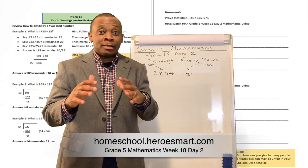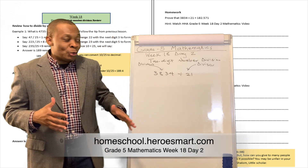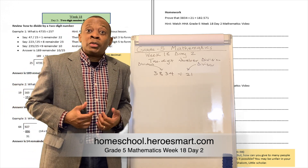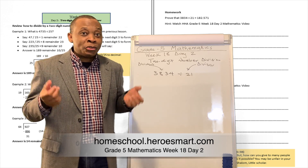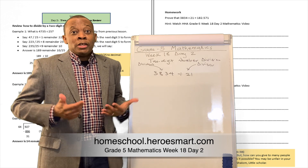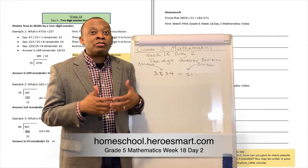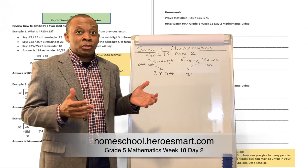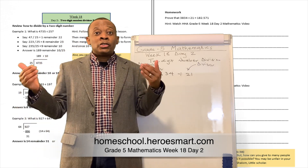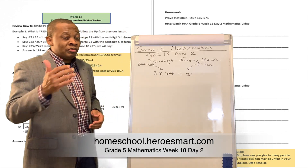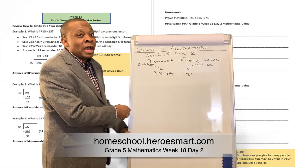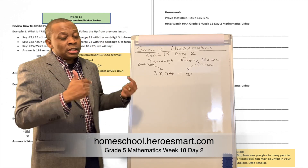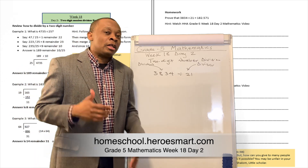Listen boys, girls, moms and dads, welcome to Heroes Modern School Academy. This is fifth grade mathematics, week number 18 and day number two. We're going to do another review session today because we're getting ready for another midterm examination. If you've registered on the portal, you get a chance to take examinations after every nine weeks. During the 18th week of the semester we get a chance to look at certain lessons we've learned before. Today we're going to be doing a review of two-digit divisions. If you have a number and you want to divide that number by a two-digit number, how do we exactly do that? We did that a few weeks ago, but let's try to reflect on how to do that one more time.